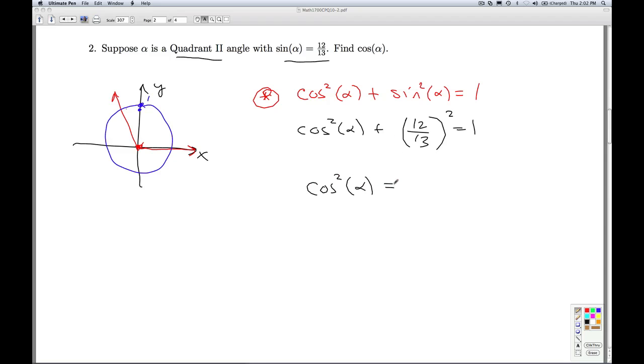So cosine squared alpha plus, and remember from arithmetic, when you square a fraction, you square the top, square the bottom. So that's 144 over 169. And that's equal to one. Subtract 144 over 169. You get 1 minus 144 over 169. I don't want to belabor the arithmetic here, but you get the common denominators of 169 over 169.